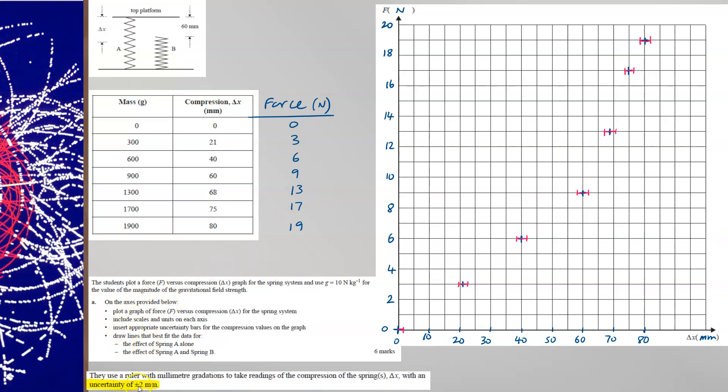The next thing it asks you to do is to plot uncertainty bars. Well, the uncertainty is plus or minus two millimetres. So these uncertainty bars are two millimetres to the left and two millimetres to the right of the central point. So there's five millimetres for a large square. And so it's two fifths of the way along a square.